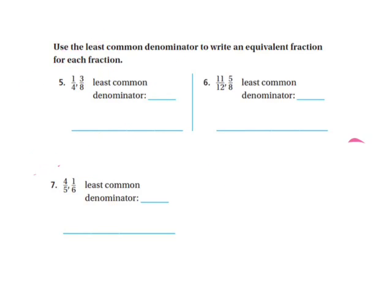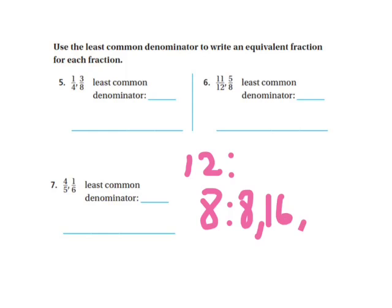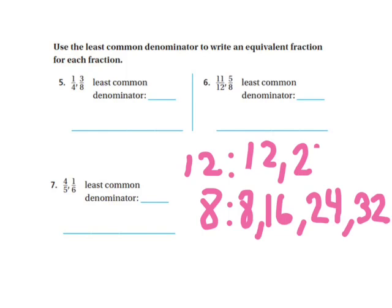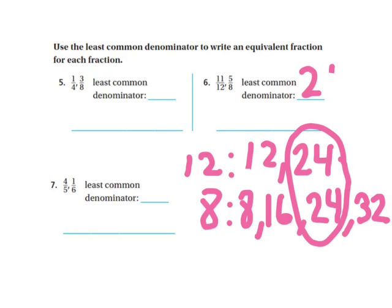Now we have 11/12 and 5/8. I'm going to do the multiples method first. The multiples of 8 are 8, 16, 24, 32 — I'll stop there. And for 12 I have 12, 24 — and I can see that I have 24 in common. So 24 is my least common denominator.